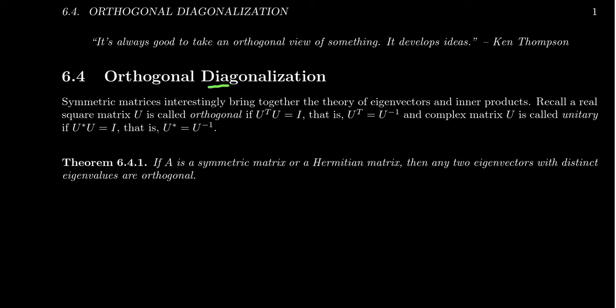Also, the main word in the title — diagonalization — is important as well. Diagonalization involves the eigenvectors and eigenvalues of the matrix, so eigen theory is going to come into play here a lot. This is a really great marriage of eigen theory and the inner products we had done previously, and the last three chapters really come into play in this section.